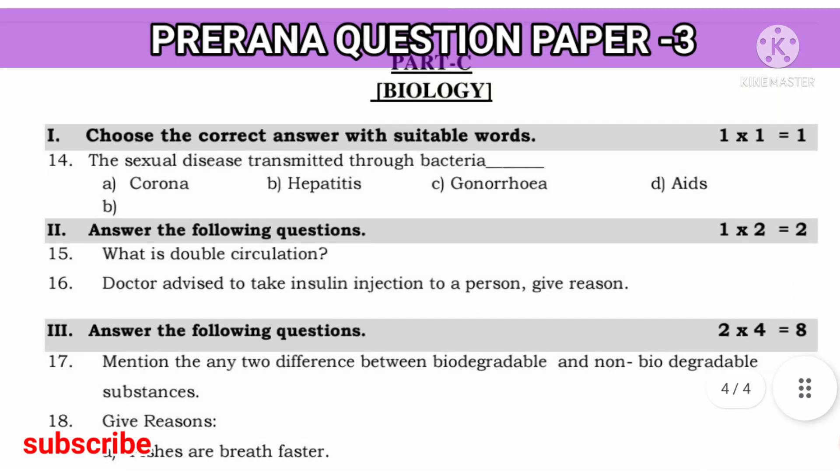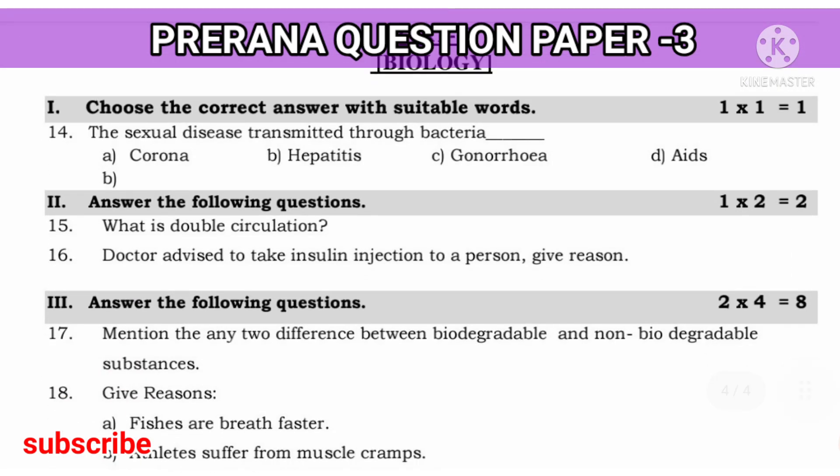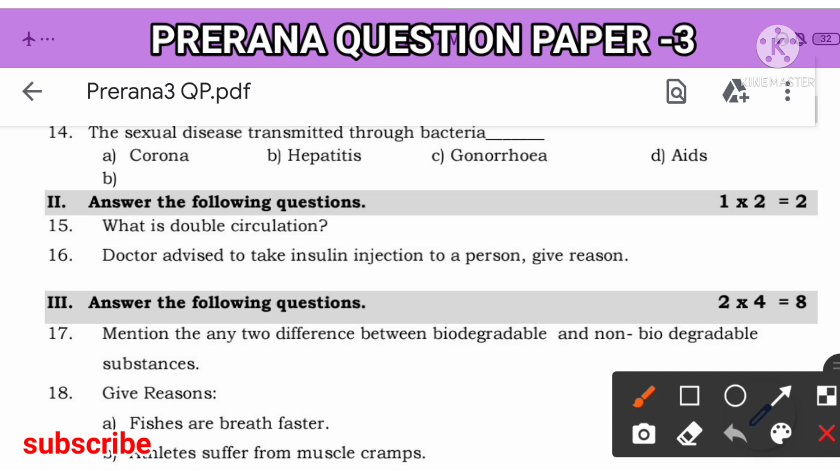Moving to biology. You should analyze this question paper. I have already told you. You must answer correctly with a sheet of paper. The sexual disease transmitted through the bacteria. Sexual diseases transmitted through bacteria. So, bacteria is transmitting. You know from text book. Gonorrhea and syphilis.